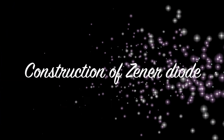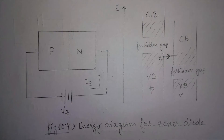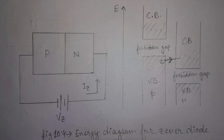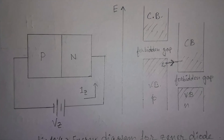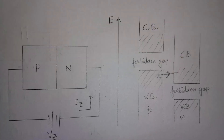Now let us learn the construction of Zener diode. The Zener diode operation depends on the heavy doping of its PN junction. The depletion region thus formed is very thin, of the order of less than 1 micrometer. This results in a small reverse bias voltage of about 3V or 5V, allowing electrons to tunnel from the valence band of the P-type material to the conduction band of the N-type material.